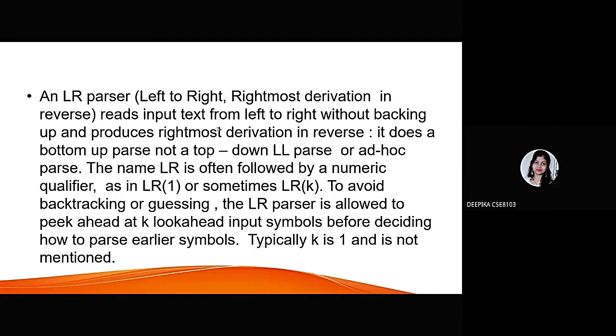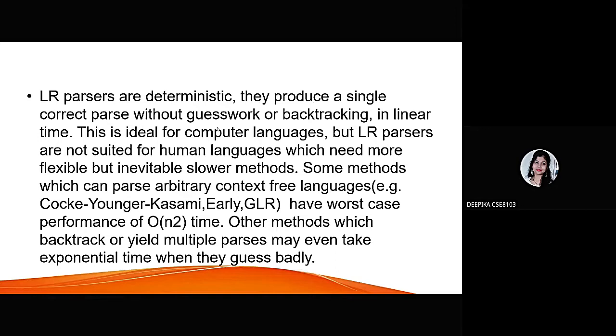An LR parser, left-to-right, rightmost derivation in reverse, reads input text from left-to-right without backing up and produces rightmost derivation in reverse. It does a bottom-up parse, not a top-down LL parse. The name LR is often followed by a numeric qualifier as in LR(k). They avoid backtracking, using k look-ahead input symbols before deciding how to parse. LR parsers are deterministic. They produce a single correct parse without guesswork and backtracking in linear time. This is ideal for computer languages, but LR parsers are not suited for human languages, which need more flexible but inevitable approaches.